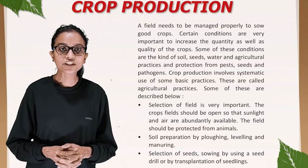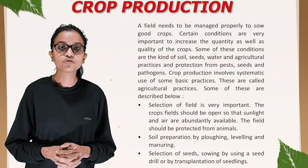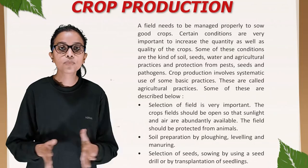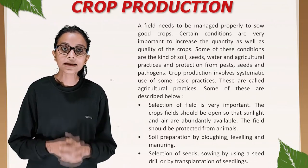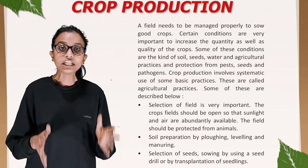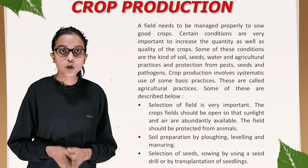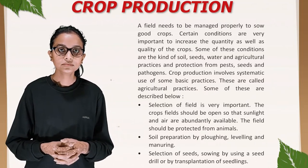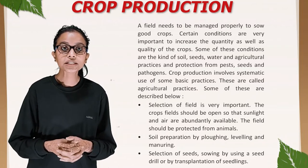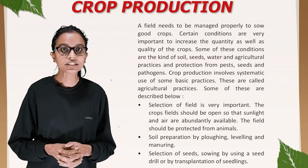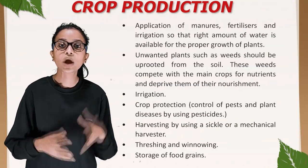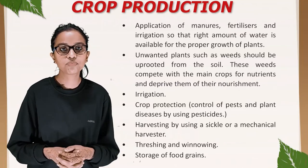Crop production involves systematic use of some basic agricultural practices. Selection of field is very important — the crop field should be open so that sunlight and air are abundantly available, and the field should be protected from animals. Soil is prepared by plowing, leveling, and manuring. Seeds are selected and sown using a seed drill or by transplantation of seedlings. Application of manures, fertilizers, and irrigation ensures the right amount of water is available for proper plant growth.